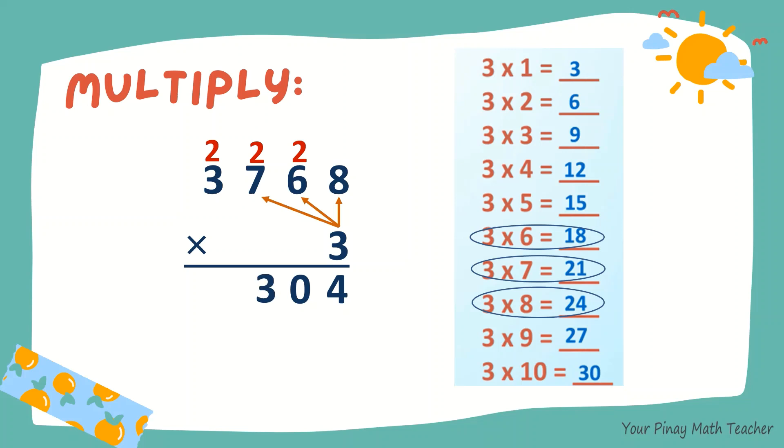So 3, carry 2. 3 times 3 is 9. Plus 2, 11. So the product is 11,304.